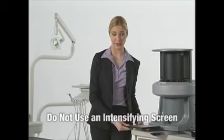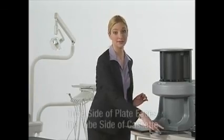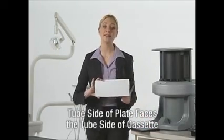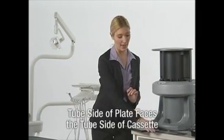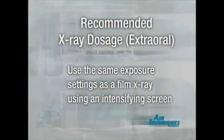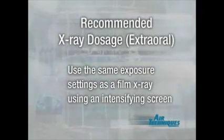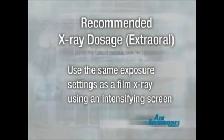As we did with the intra-oral plates, the tube side, the blank side of the plate, faces the tube side of the cassette. Since the plate doesn't go into the mouth, there's no barrier envelope. Load the cassette into your x-ray unit as you would for film and start using the same exposure settings as if you were making a film x-ray using an intensifying screen.